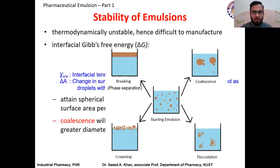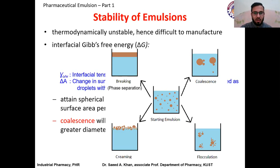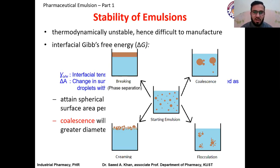There are different terminologies used for instability of emulsion. If the two phases completely separate into two distinct layers, we call it phase separation. There is also a condition called coalescence, which is the cohesion of droplets with each other forming a bigger droplet — two small droplets combine together to form one big droplet.